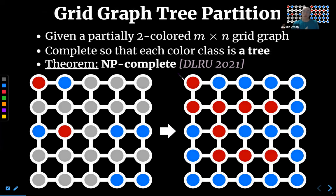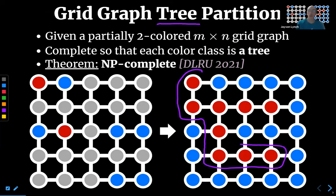Another related problem is grid graph tree partitioning. Same setup — a grid graph where we have two color classes, red and blue — but this time we force the solution to be a tree rather than any connected subgraph. We had to use a different solution in this case than on the previous slide.